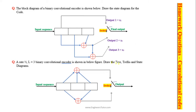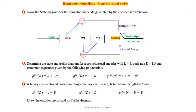Here we have to find the state transitions on the state diagram for this given convolutional encoder. Draw the state diagram of the convolutional code generated by the encoder diagram given here. Generator polynomials g1, g2, g3 are given for a rate 1-over-3 convolutional encoder with three outputs.